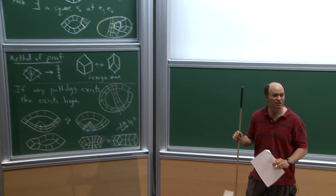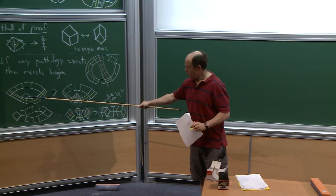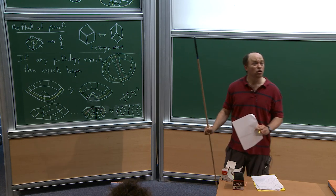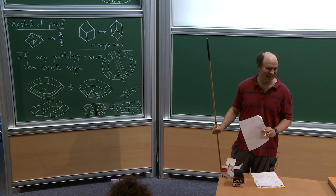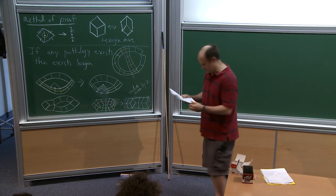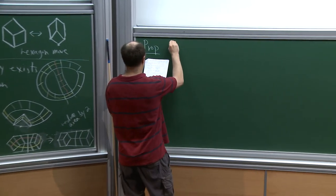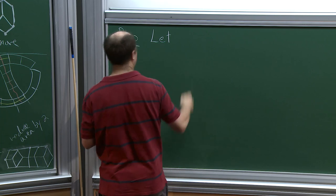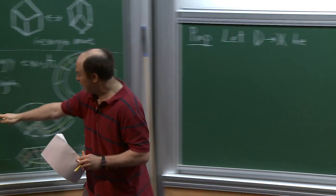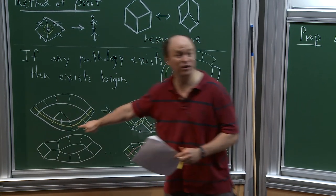A student asks: what happens if a vertex has four squares meeting there — how do you find the square corner? That's a very good question. You can either work a little bit — I hid that detail — or you can look at the following proposition. You can think about this on your own, define what it means to be a kind of lowest square, and you'll find it.